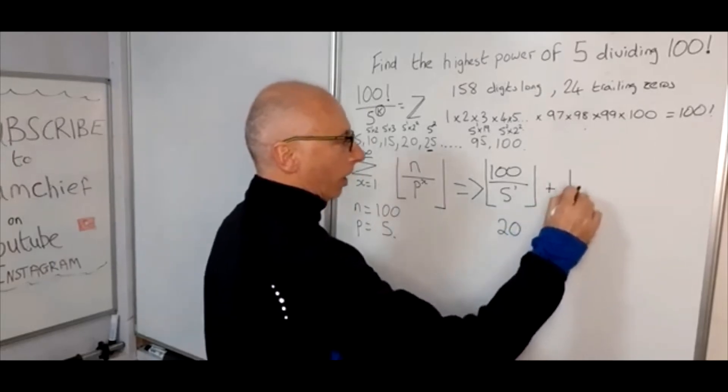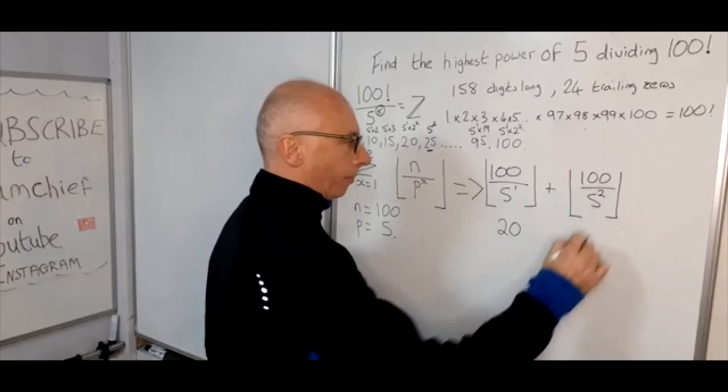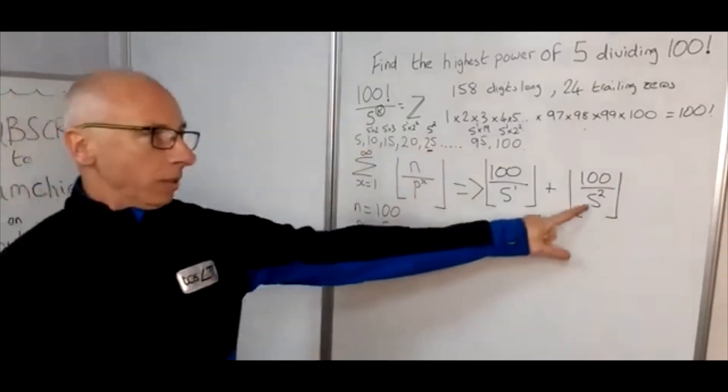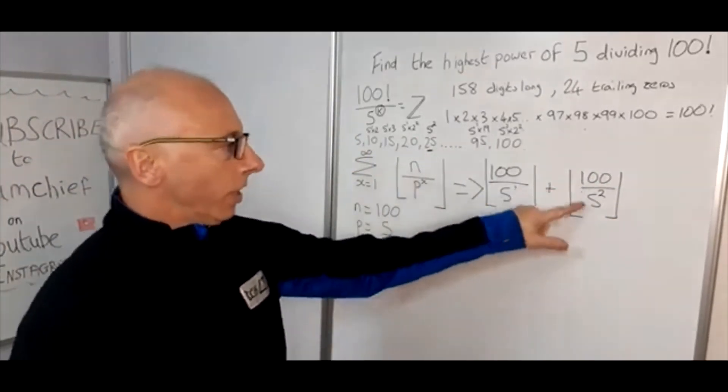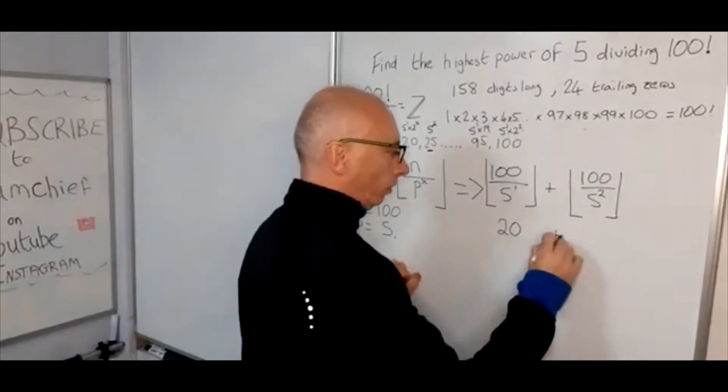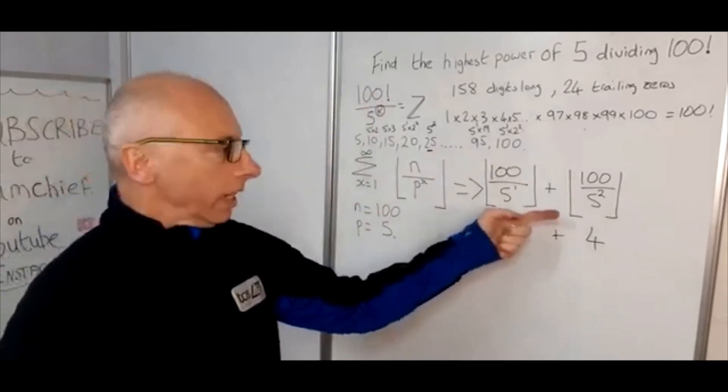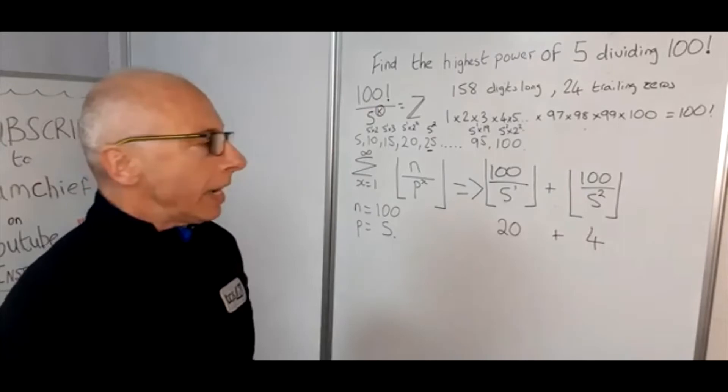As it's a summation formula, our next one enclosed in the floor function would be 100 divided by 5 squared. Now 5 squared we know is 25. 100 divided by 25 is 4. So our floor function here at the moment looks like it's not needed.